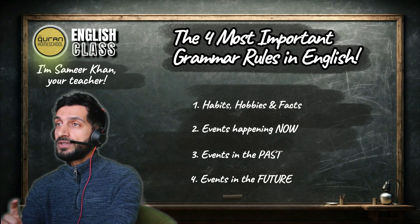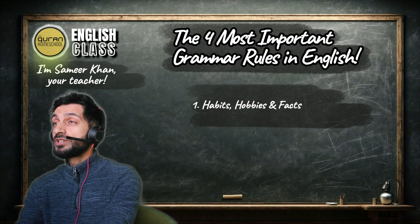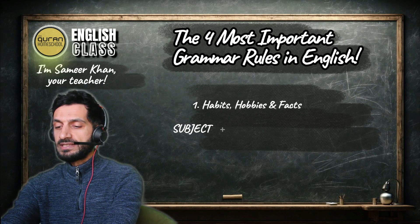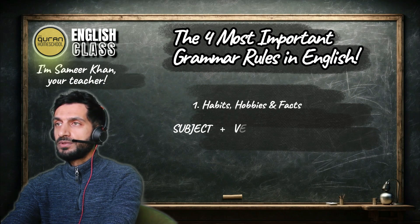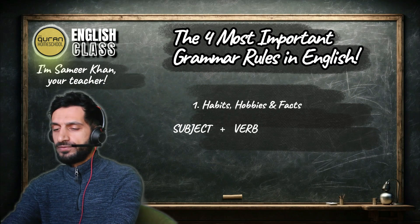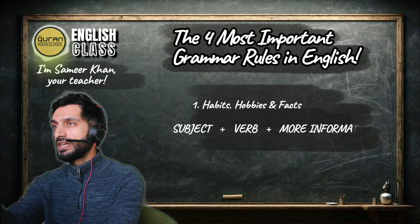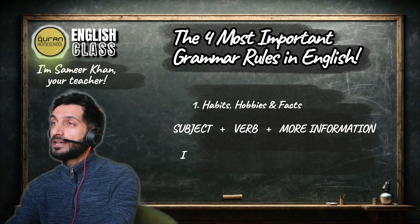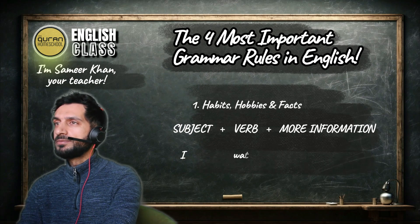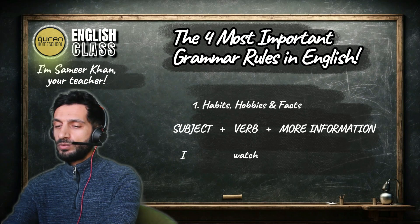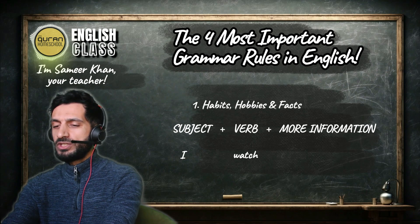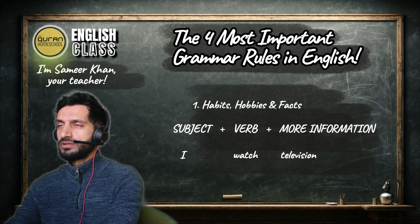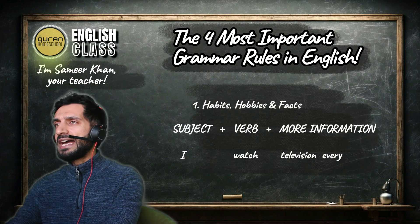In English we have a sentence order. We start with the subject and then we use a verb. So it's: subject, verb, then more information. If you are talking about yourself, I is the subject. So we begin with I. What's the verb? Watch. And more information: television. So number one: I watch television. You can add more information like every day, on the weekend, in my free time.